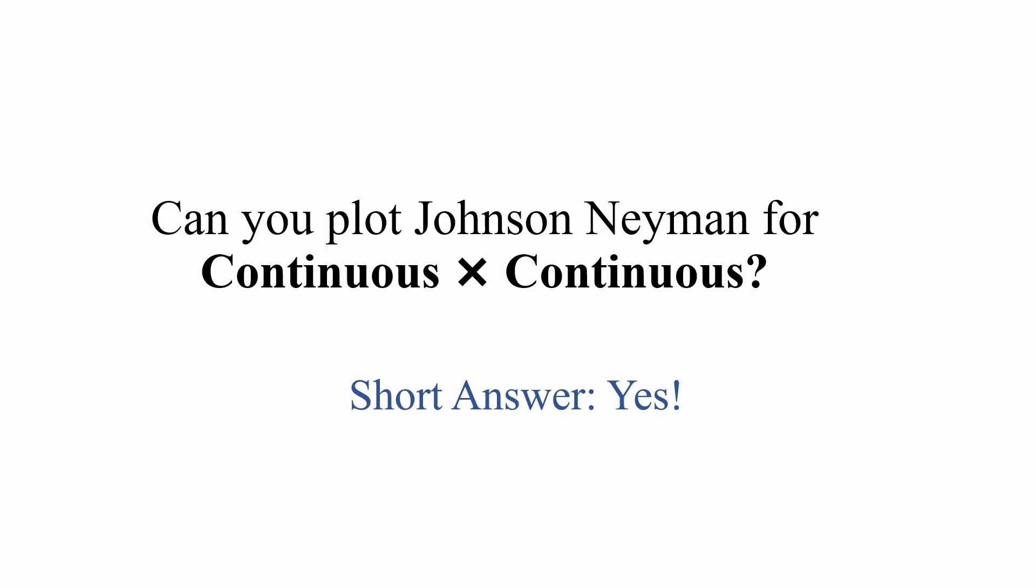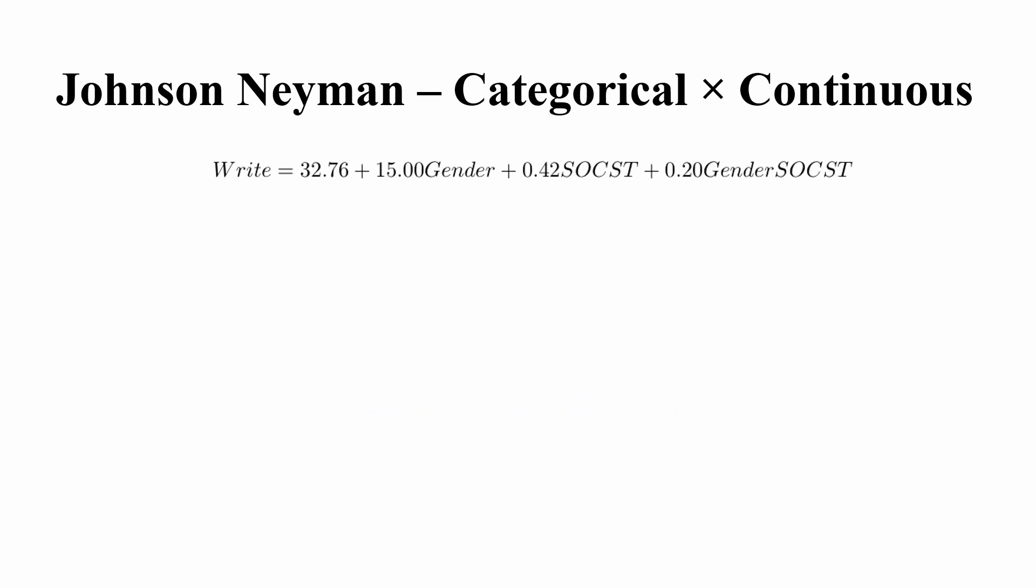Before going to the continuous times continuous situation, let me rehearse a bit about the situation for categorical times continuous. So this is the example I used in that video in which the y is a writing score, gender is categorical, social science score is continuous, and this is the interaction between a categorical variable and continuous variable.